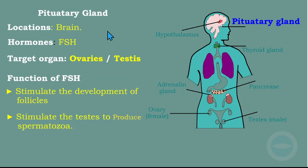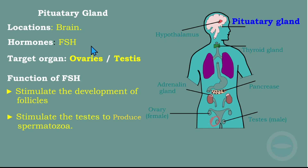FSH (follicle stimulating hormone) is also secreted by the pituitary gland. The targets of FSH are the ovaries and the testes. Its functions: in females, it stimulates the development of follicles; in males, it stimulates the testes to produce spermatozoa.